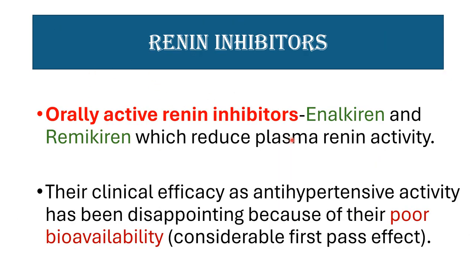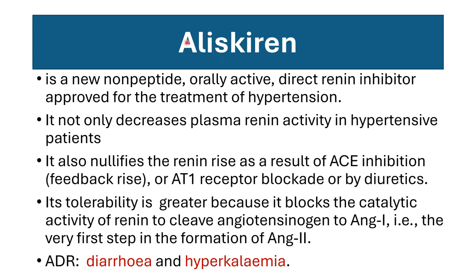Orally active renin inhibitors like enalkiren and remikiren reduce plasma renin activity but their clinical efficacy as antihypertensive agents has been disappointing because of poor bioavailability. Aliskiren is an orally active direct renin inhibitor, a new non-peptide drug approved for treatment of hypertension. It not only decreases plasma renin activity in hypertensive patients but also nullifies the compensatory renin rise resulting from ACE inhibitor or angiotensin 1 receptor blocker use. It blocks the catalytic activity of renin to cleave angiotensinogen to angiotensin 1, the very first step in the formation of angiotensin 2.